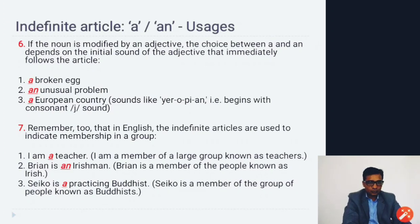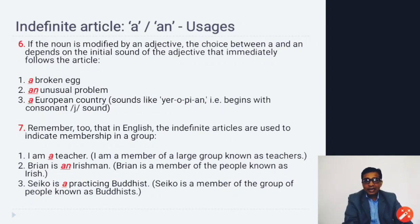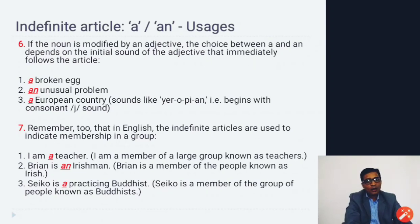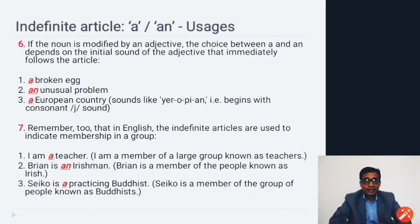If the noun is modified by an adjective, the choice between 'a' and 'an' depends on the initial sound of the adjective immediately following the article. For example: 'a broken egg' — 'broken' starts with 'b', a consonant, so we use 'a'. Another example: 'an unusual problem' — 'u' is a vowel sound. And 'a European country' — 'European' sounds like 'you', beginning with a consonant 'y' sound.